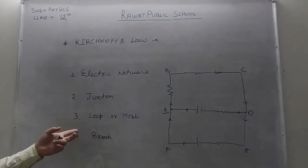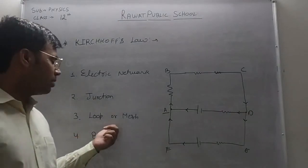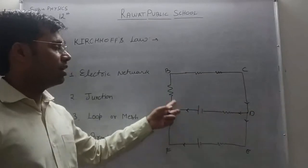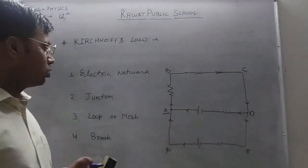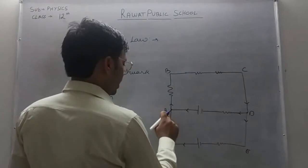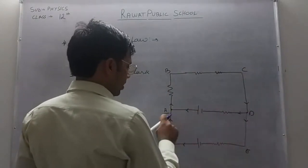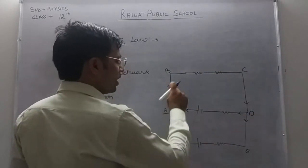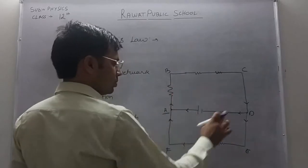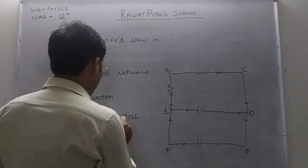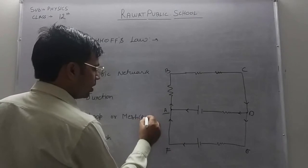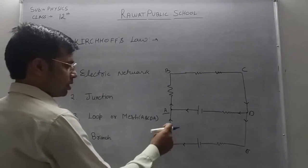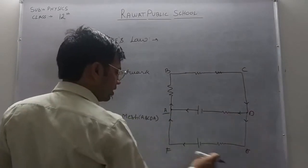The next thing is loop or a mesh. So in this diagram, A, B, C, D, A is a loop. This is a loop. This is a loop. And this is a loop, this is a loop. And this is a loop.